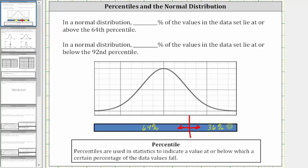So going back to the question, in a normal distribution, what percent of the values in the data set lie at or above the 64th percentile? That would be 36%.